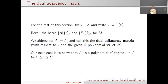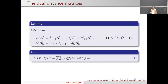Let's bring in the subconstituent algebra, fix a base vertex x, and write T(x). Recall the bases for the dual Bose-Mesner algebra: the A*_i basis and the E*_i basis. Abbreviate A* for A*_1, calling it the dual adjacency matrix with respect to the base vertex x and the given Q-polynomial ordering. My next goal is to show that A*_i is a polynomial of degree i in A* for every i from 0 to D. We have A* · A*_i as a linear combination of b*_{i-1}·A*_{i-1} + a*_i·A*_i + c*_{i+1}·A*_{i+1} for i from 1 to D−1.